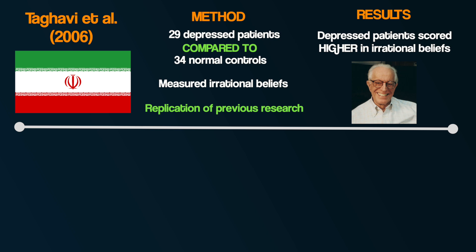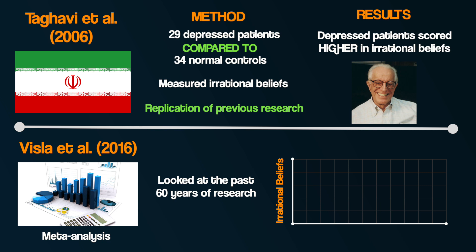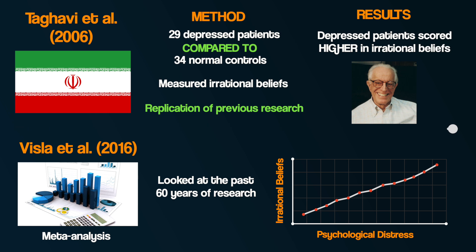For other supporting research, Vizsler et al. in 2016 conducted a meta-analysis looking at what research showed over the past 60 years about the relationship between irrational beliefs and psychological distress. Overall, they found that irrational beliefs were positively associated with various types of distress, including depression. Therefore, based on this research, it could be argued that the role of cognition — specifically irrational thinking — is an important factor in explaining depression.